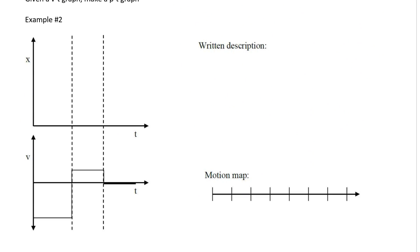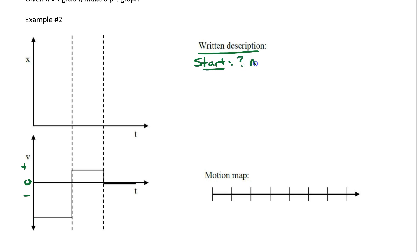One big change is when we look at this information, typically when I start the written description, the first thing I write down is where I'm starting. But when I'm looking at the velocity-time graph, I see that to begin with the velocity is some fairly large negative value — so it's moving in the negative direction rather quickly — and then it changes directions and moves in the positive direction slowly. But nowhere does it tell me where it starts, so this information is not given.